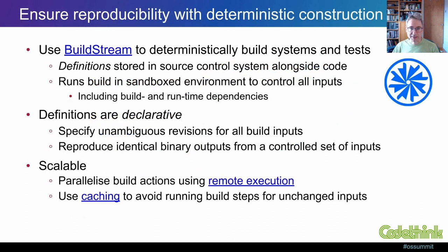Managing such build and integration steps effectively is where we turn to our second open-source tool, Buildstream. This allows us to build our systems and tests deterministically, so that we can be confident that we will get identical results from the same set of inputs. Buildstream's definition files, which are again written in YAML, allow us to do this very precisely, using a declarative syntax that can be used to specify unambiguous revisions for all build inputs. This includes both build and runtime dependencies, which can be very important, as the behaviour of a system may be affected by the tool chains used in its construction.